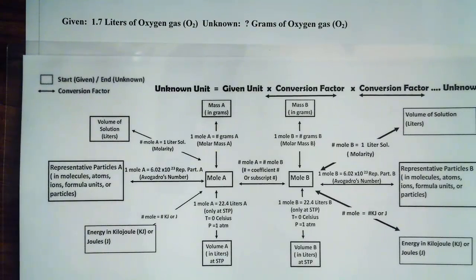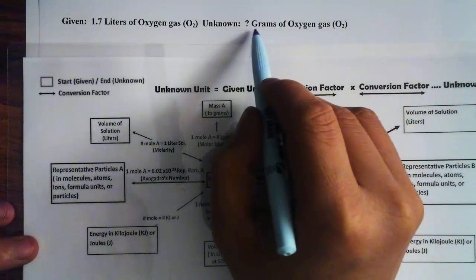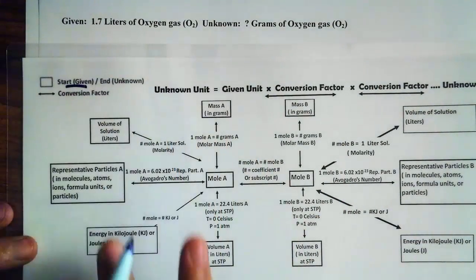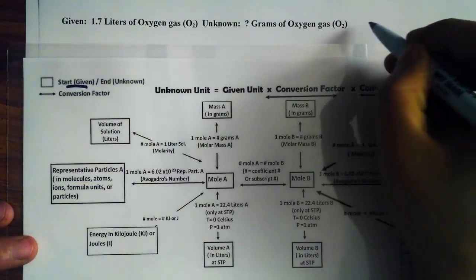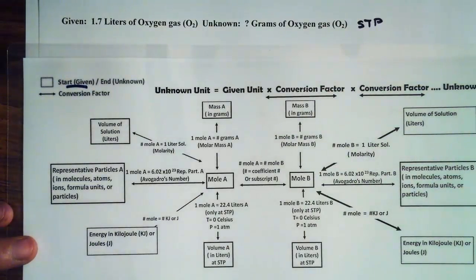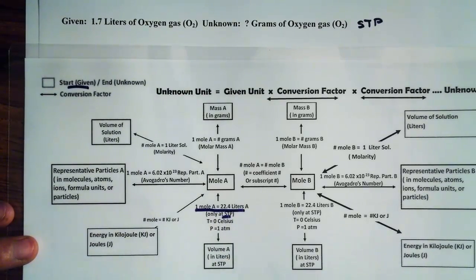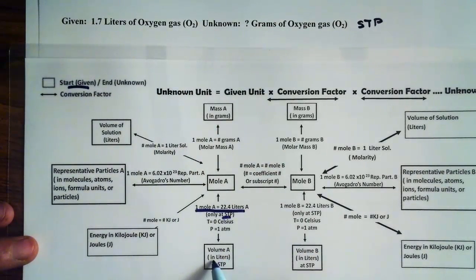Let's try another problem. Our given is 1.7 liters of oxygen gas, and the unknown is grams of oxygen gas. We always start from our given unit on the flowchart. Where is liter? Liter is right here. One important thing — this actually happens at STP, because in order to use the conversion factor 1 mole of A equals 22.4 liters of A, that conversion factor must be used at Standard Temperature and Pressure.